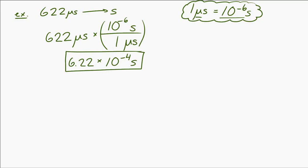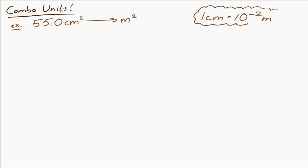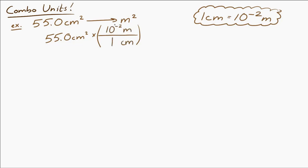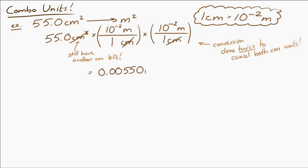Now let's make it a little more complicated with a combination of units. Say I have 55.0 square centimeters and I want to convert that to square meters. I know one centimeter is 10⁻² meters. If I apply the conversion factor once, I only cancel out one centimeter — but I have centimeters squared, so I still have another centimeter to get rid of. I have to do the conversion twice. Doing it twice, I end up with 0.00550 square meters. When you have exponents, you have to pay special attention.